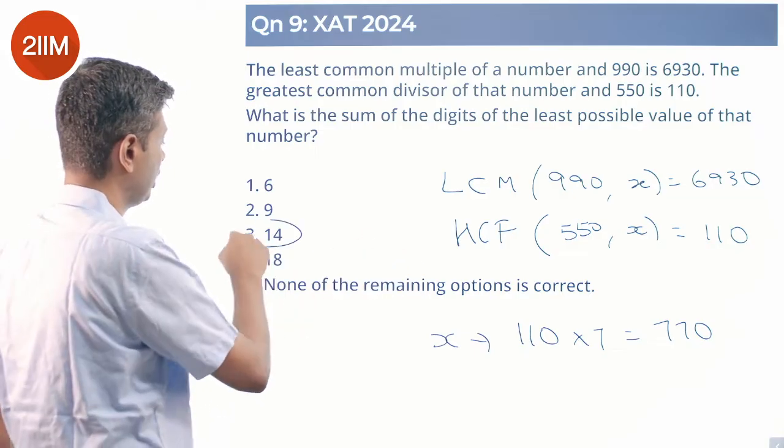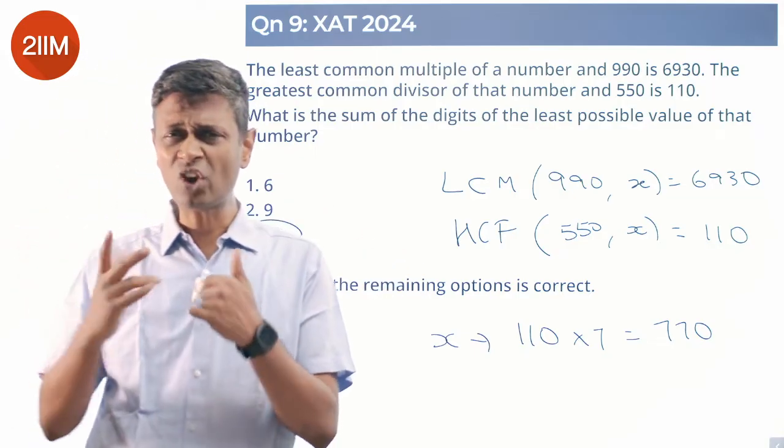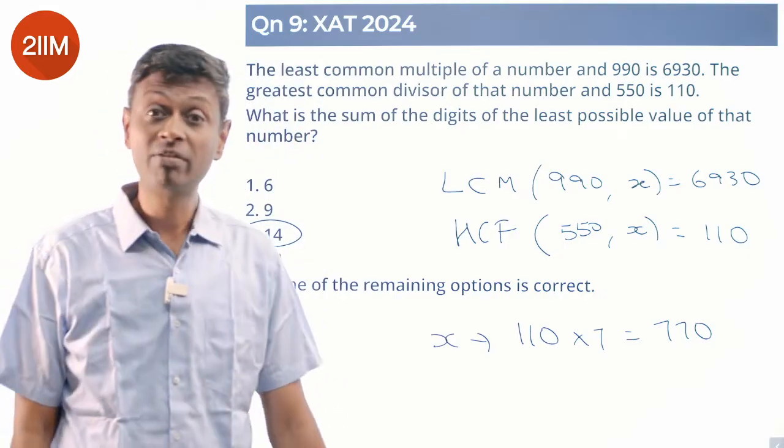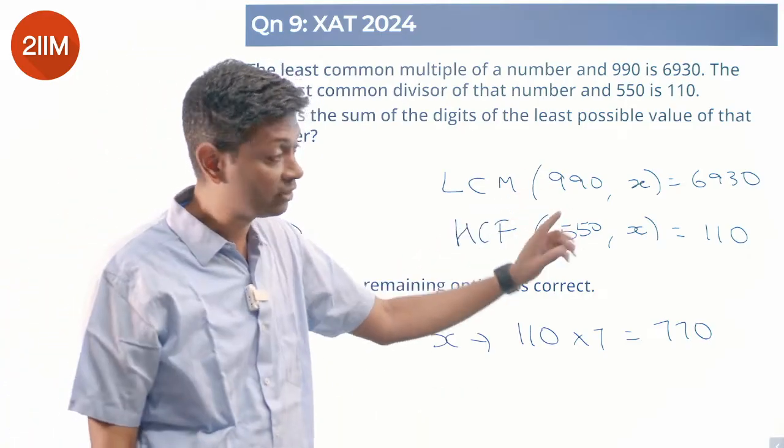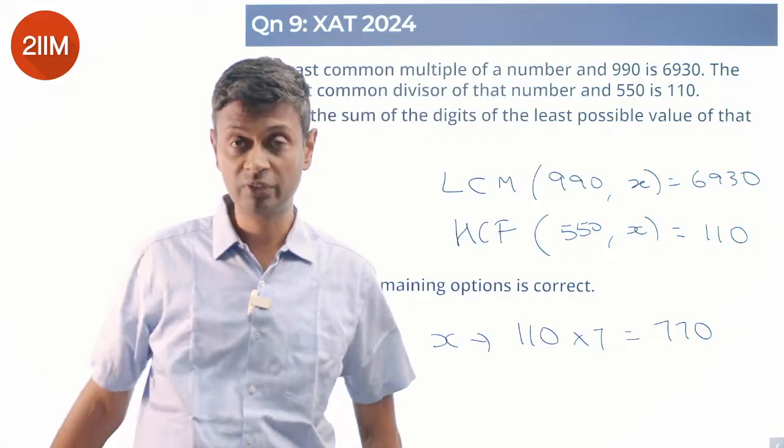Done. Tricky sounding question, but not really. This question would have been more interesting if they said find all possible numbers that satisfy this category, or how many numbers satisfy this condition. That's trickier.